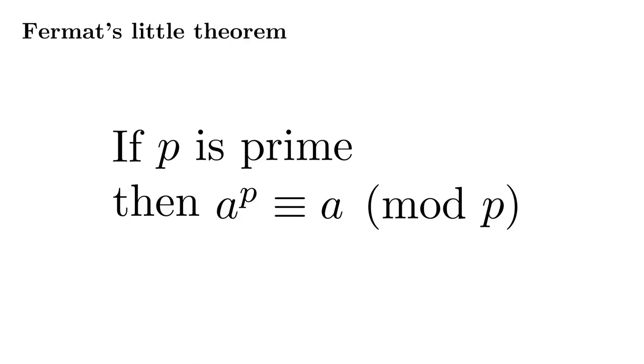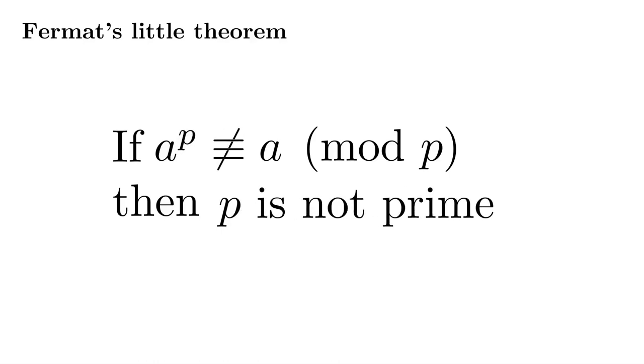Now, we can take the contrapositive of that statement, exchanging the if and the then and negating those two statements. Now, that contrapositive also holds, and this is a general phenomenon. If we have a theorem of the form, if p is prime, then such and such, well, if we can show that the such and such doesn't happen, then we can conclude that p isn't prime.